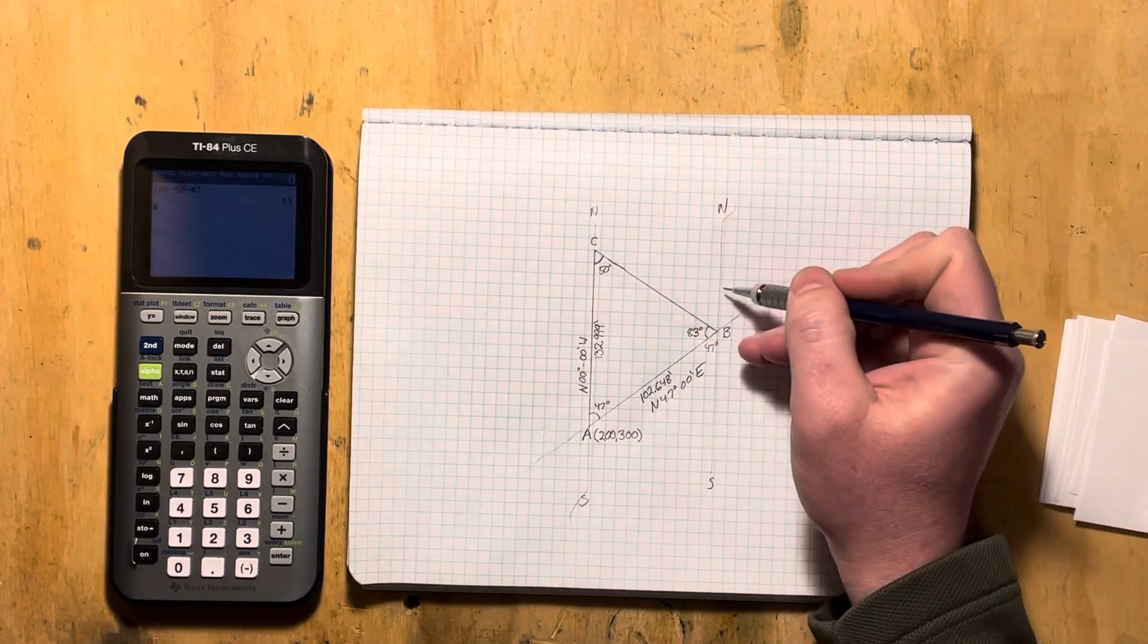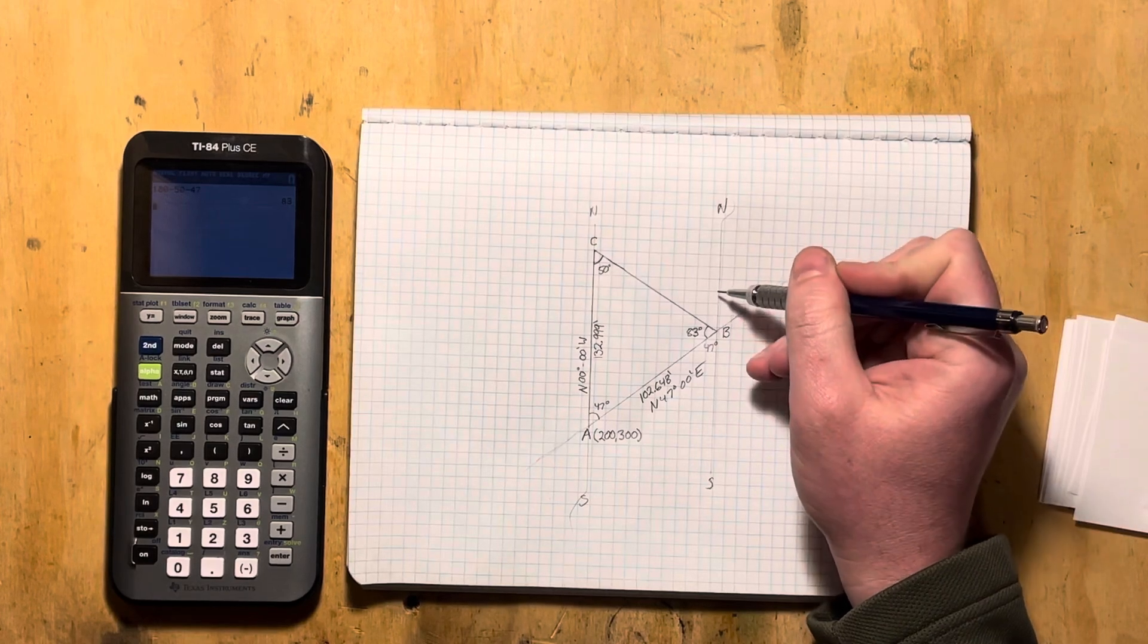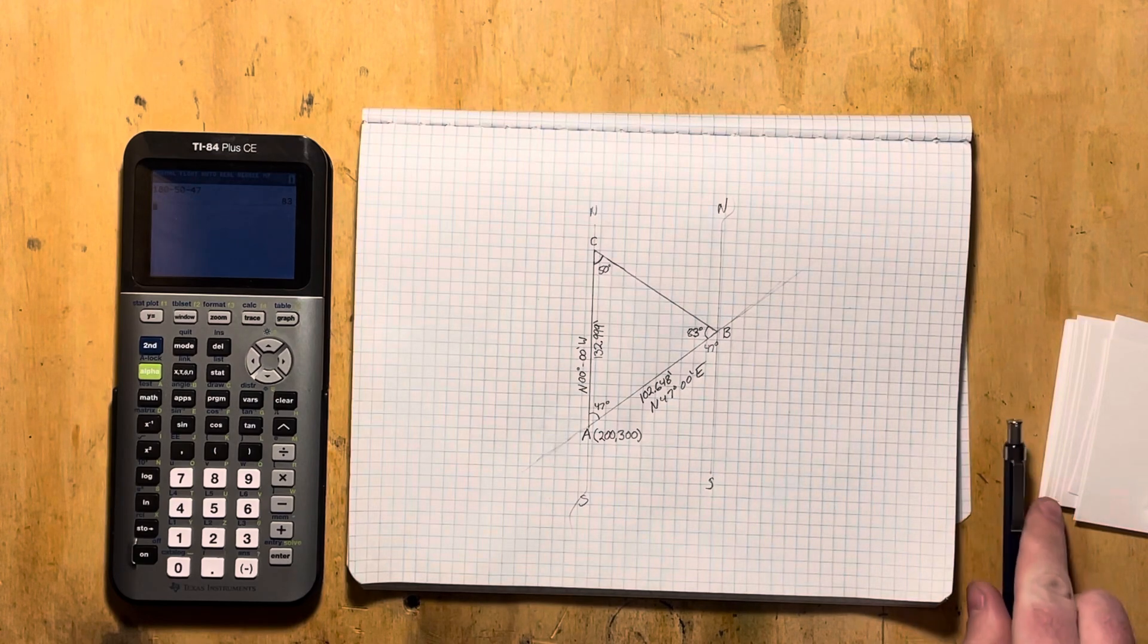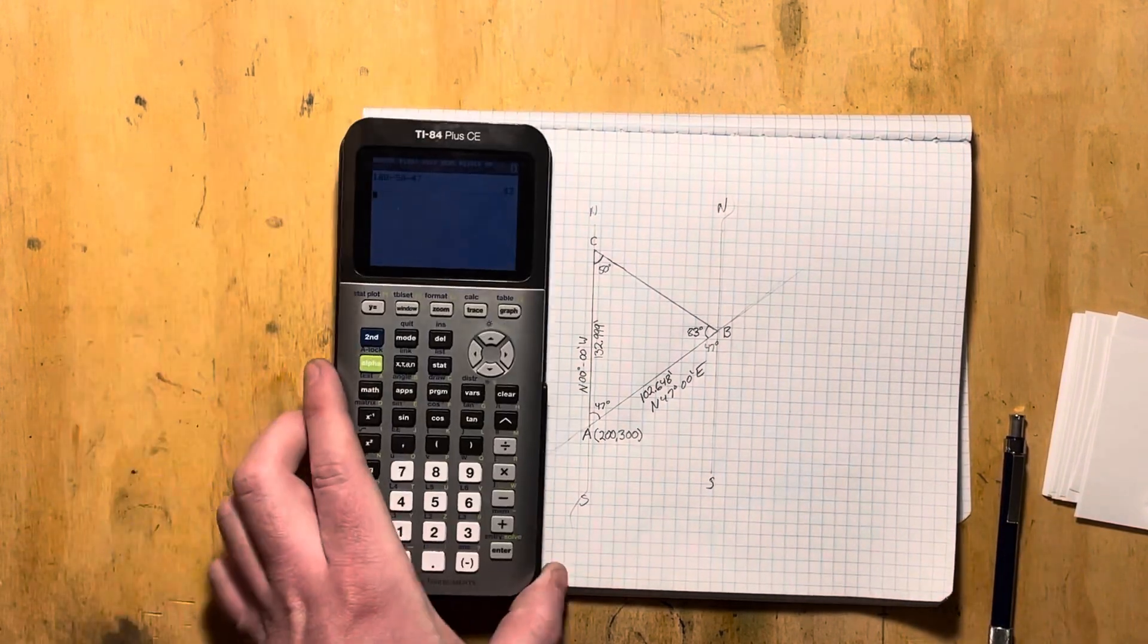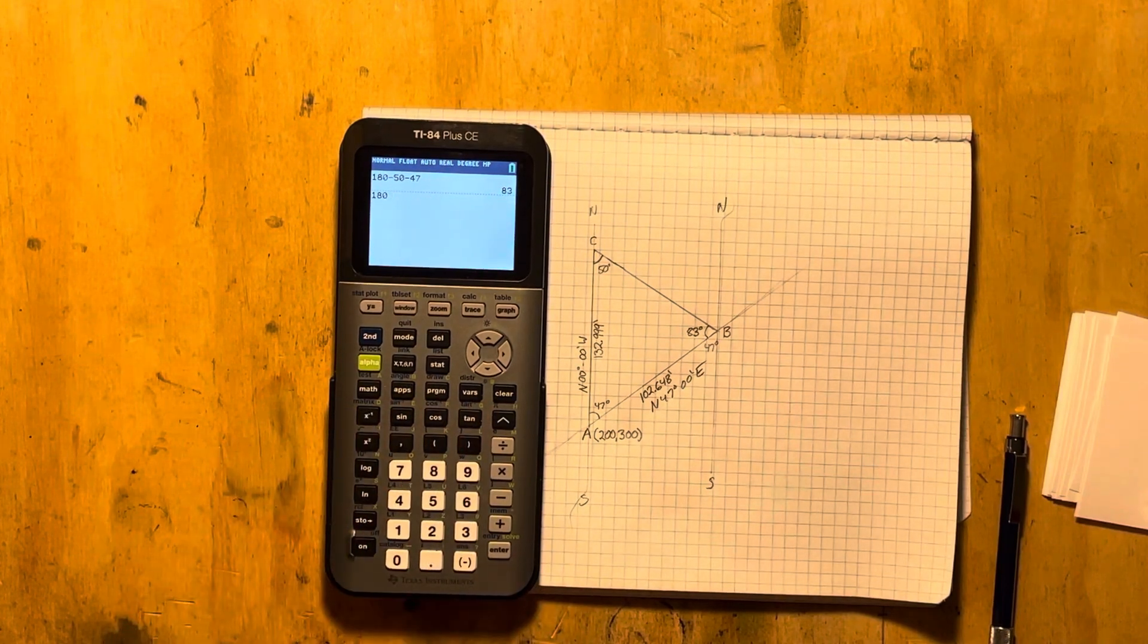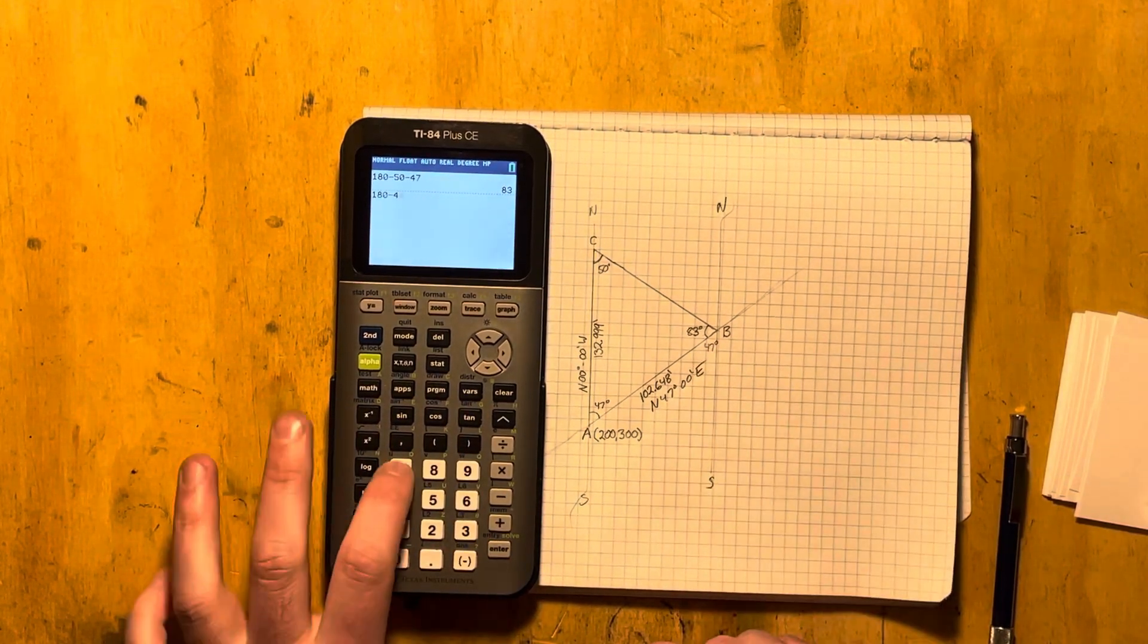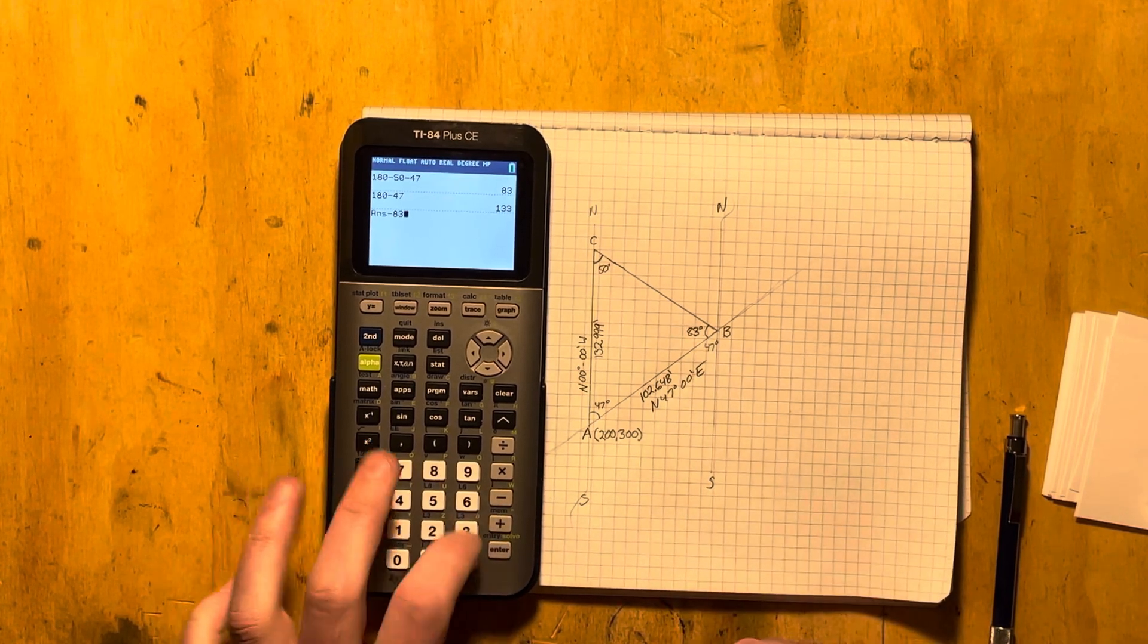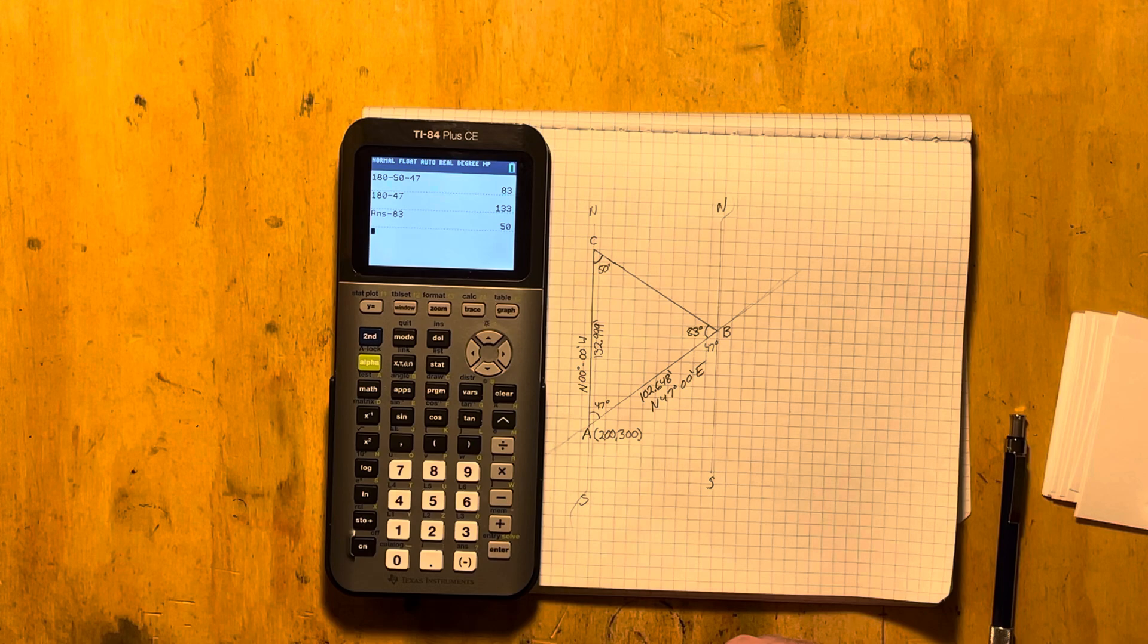Well now, we know the straight line represents 180 degrees. So we can take 180. We can subtract this 47. We can subtract 83. We're left with 50.